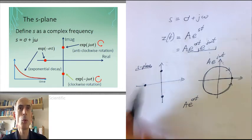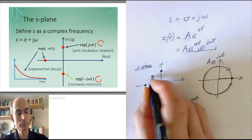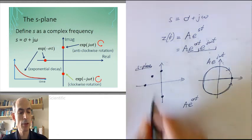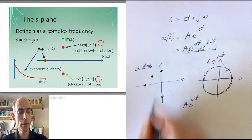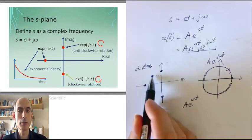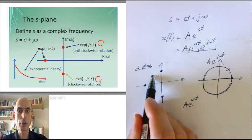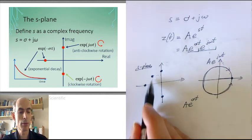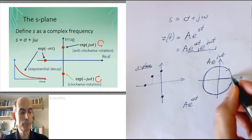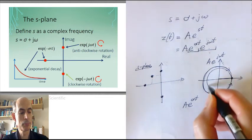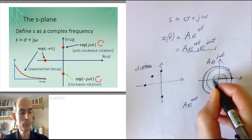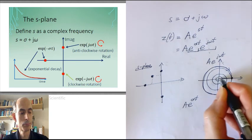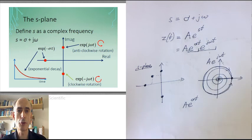So what about a point there? It has an imaginary part and it has a negative real part. So this is going to be an oscillation which decays in amplitude as a function of time. This would be doing something like this and spiralling into the origin.